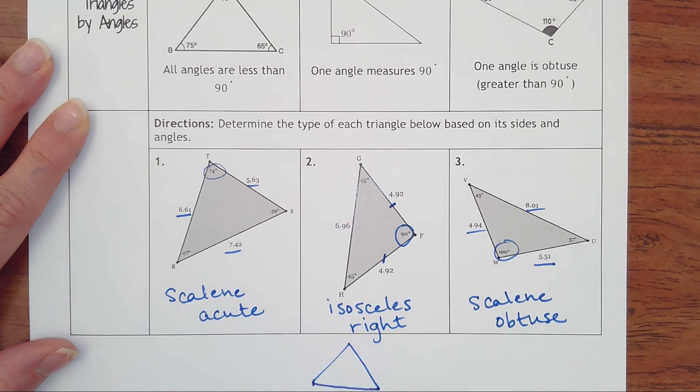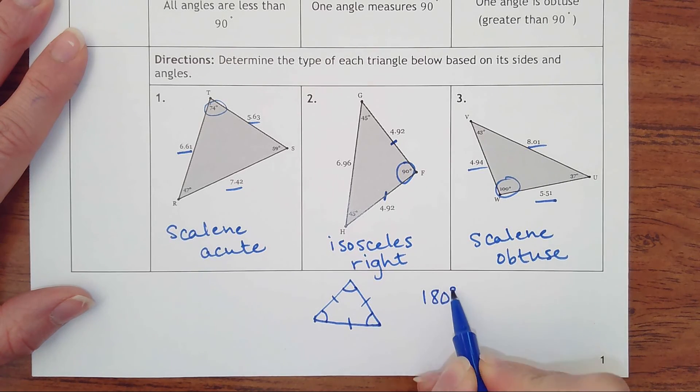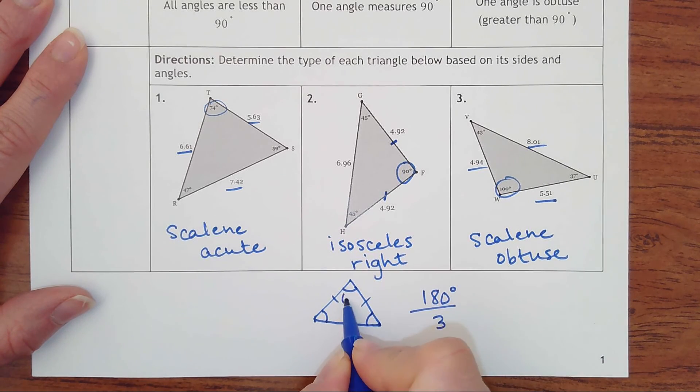You have now constructed those in the last unit. Think about if every side's the same, every angle will also be the same. So if there's 180 degrees in a triangle divided by three angles, each angle will be 60 degrees. So that's something to kind of note too.